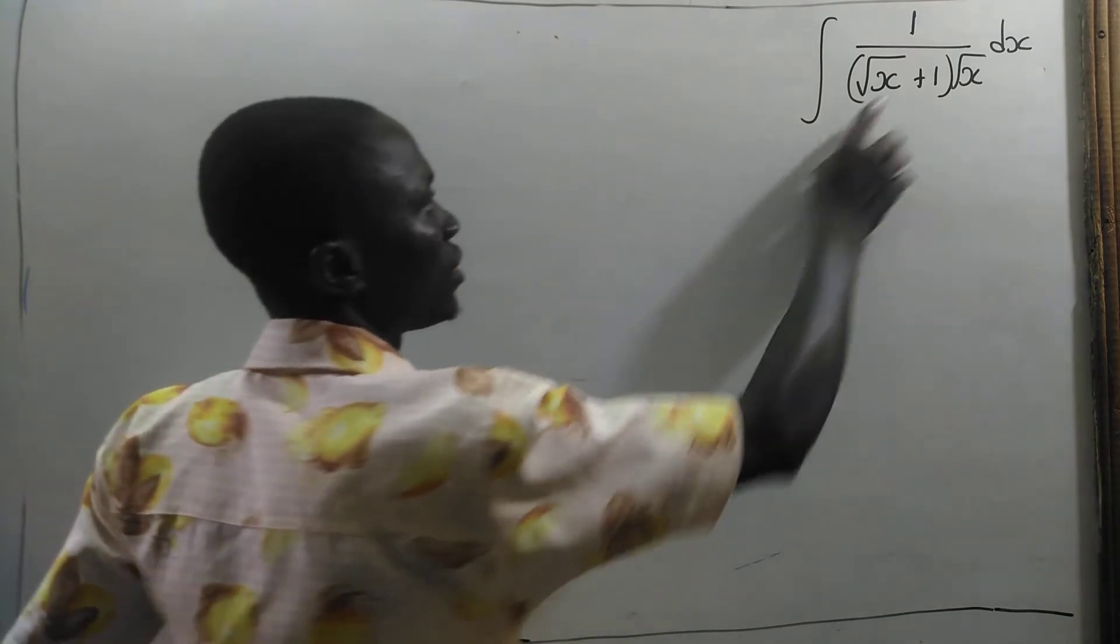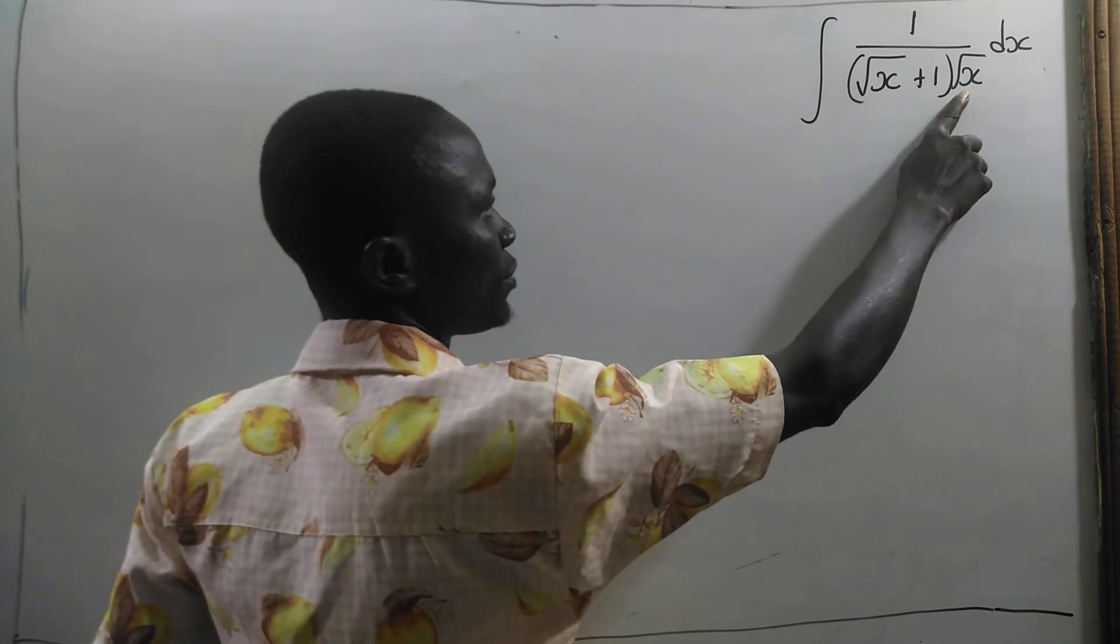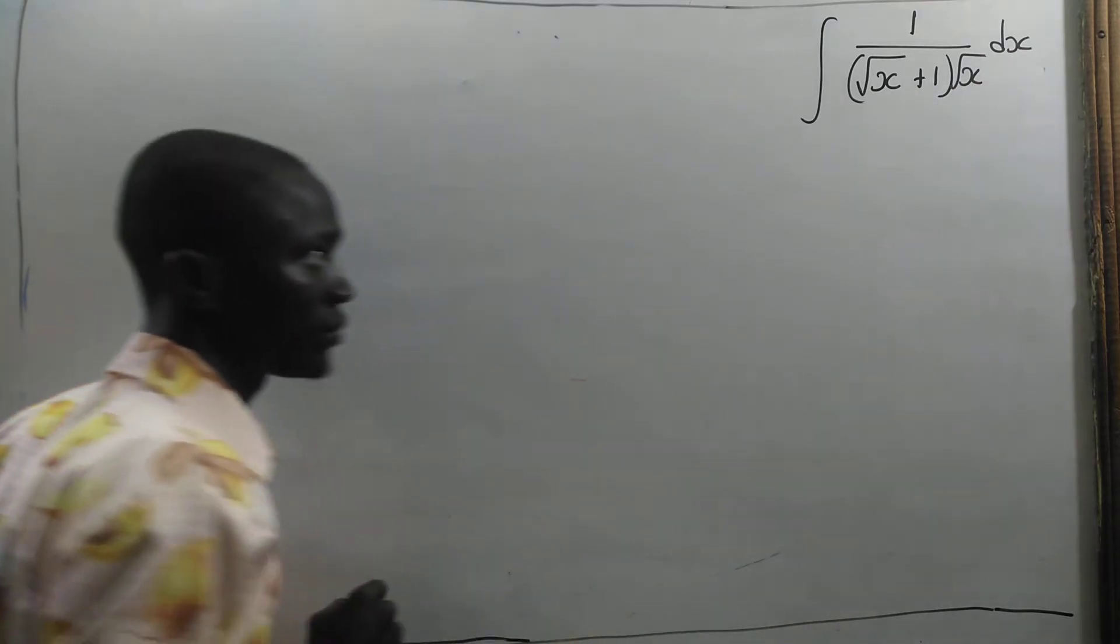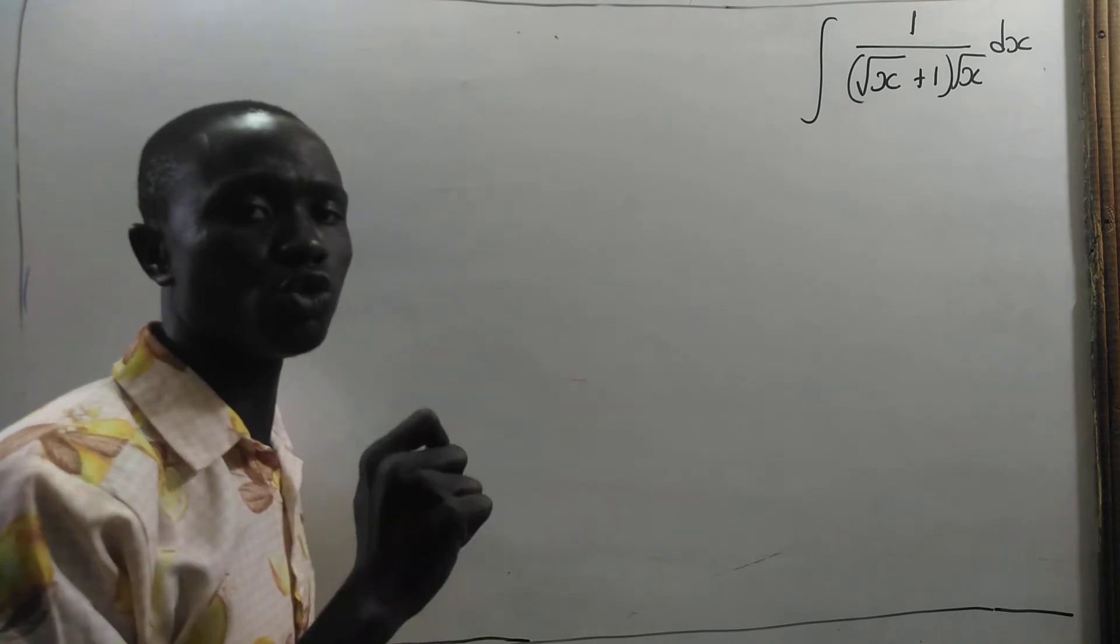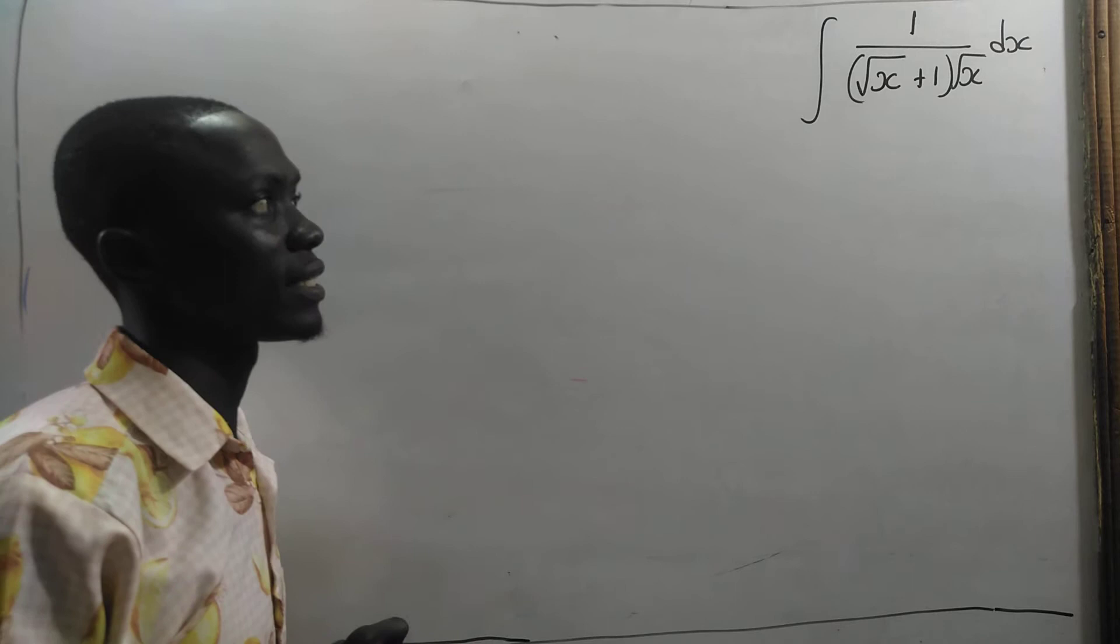We have the integral 1 divided by square root of x plus 1 times root x dx. So here we are going to do the u-substitution.